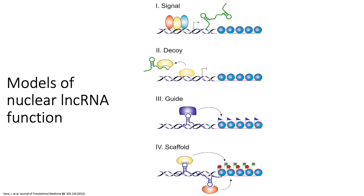LncRNAs can also act as guides — through direct recognition by chromatin-modifying enzymes or through RNA binding proteins that interact with chromatin-modifying enzymes, they can guide certain factors towards target genes of interest. Finally, they can act as scaffolds: longer non-coding RNAs can have binding sites for multiple proteins or transcription factors, bringing together multiple factors that then interact to regulate gene expression.